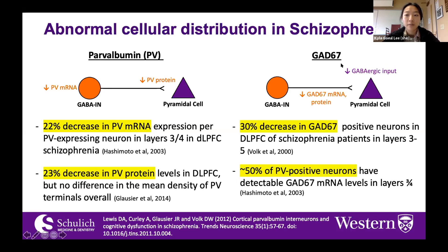In addition to parvalbumin deficits, there also seems to be a consistent finding of aberrant GAD67 protein levels, specifically in layers three to five of the dorsolateral prefrontal cortex. Interestingly, this decrease in GAD67 protein levels is only found in a subset of parvalbumin-positive interneurons. So GAD67 doesn't appear to be a universal deficit across all interneurons, but rather just a subset of parvalbumin-positive interneurons within schizophrenia.